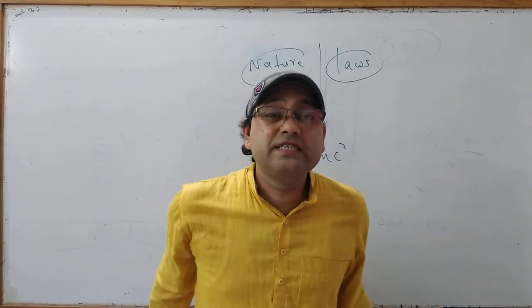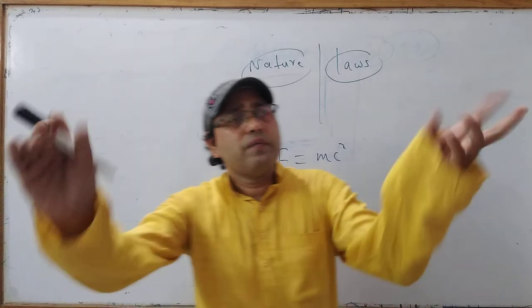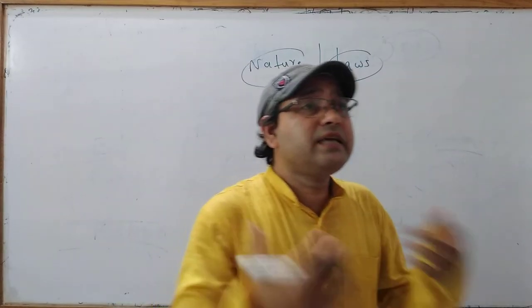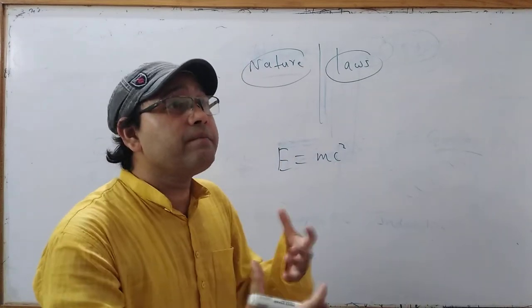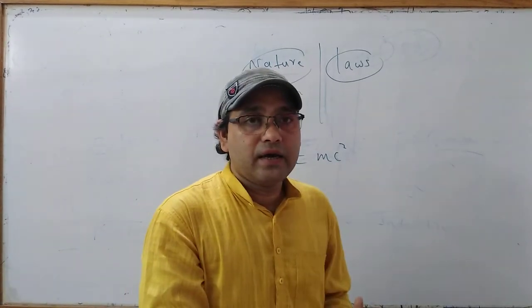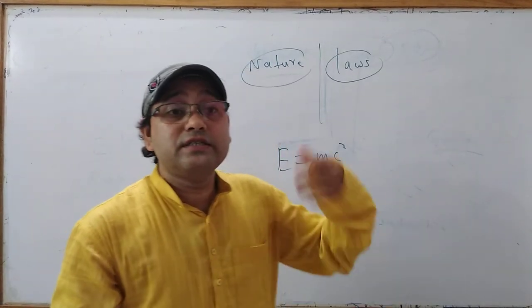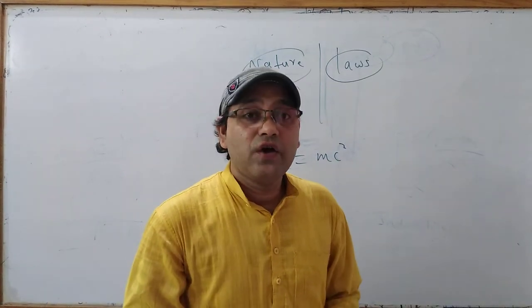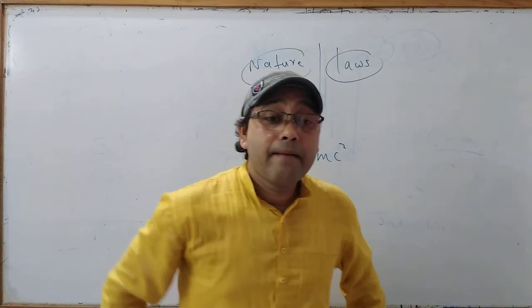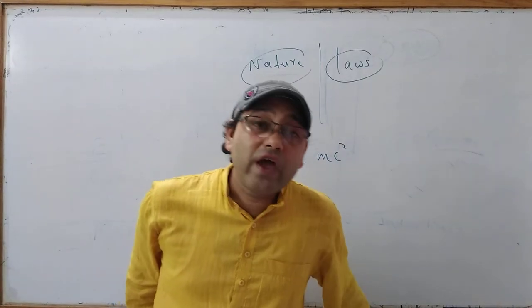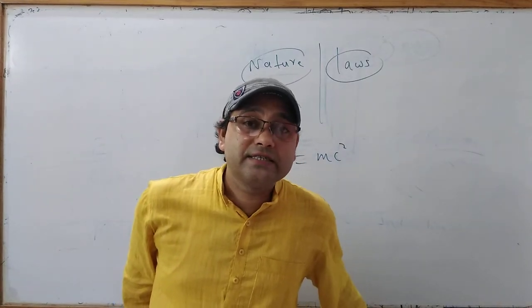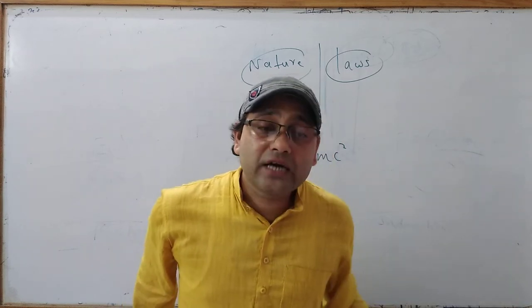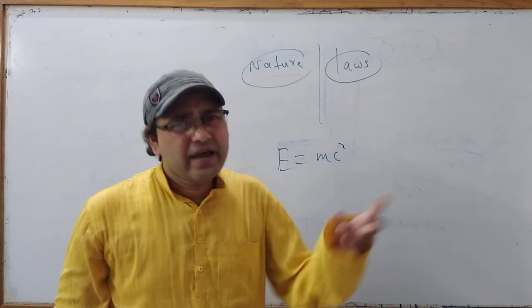For the sake of easiness, yeh joh brahman rupi physics hai, iska sarata se adhyan karne ke liye, physics ko vivin bhagow mein vivakt kya gya. In other words, physics is divided into various branches. Various branches of physics are: mechanics, heat and thermodynamics, wave and oscillation, electricity, magnetism, optics, nuclear physics, electronics, astrophysics, and many more.